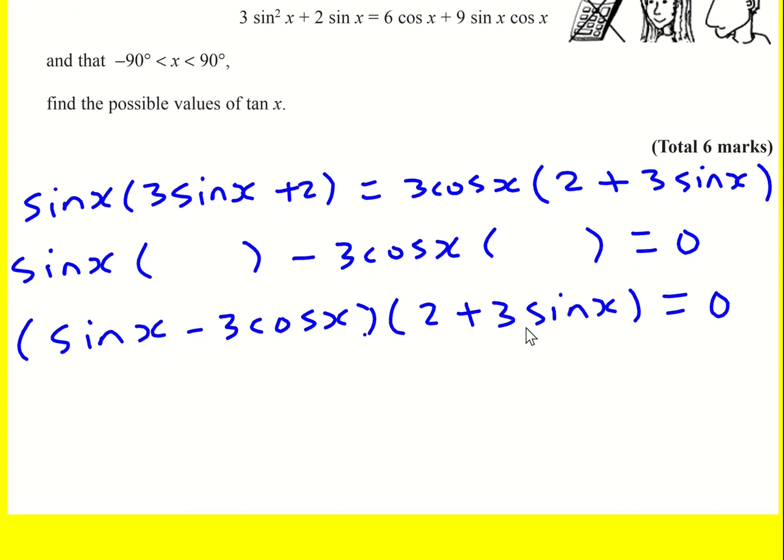But anyway, you have to somehow get to this. And once you're there, you're nearly, well, I say you're nearly there, there's still a fair bit to do. But we've done the hardest bit, I think. Because now we can just say that either sine x equals 3 cos x, and therefore sine x over cos x or tan x equals 3. And that's going to be one of my solutions.